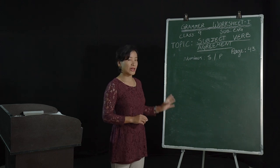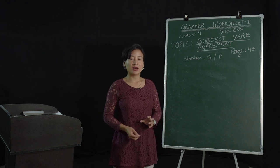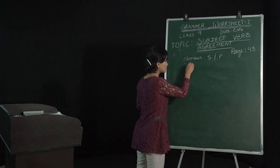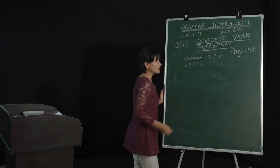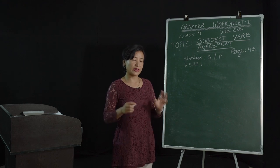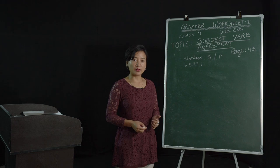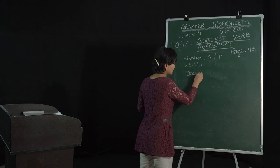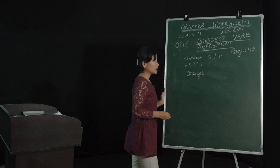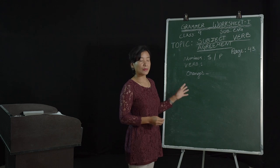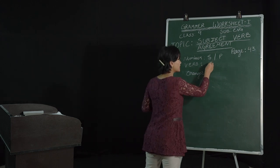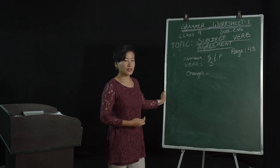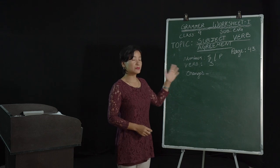Now the next thing we need to remember is that we are going to unlearn something. When it comes to verb, remember in the lower classes you may have learned — and this rule still applies — when we add an S to the noun it becomes plural, like 'orange.' However, when it comes to a verb, if we add an S, it becomes singular. By adding S to the verb, it becomes a singular verb. Keeping those things in mind, let's take a look at subject-verb agreement.